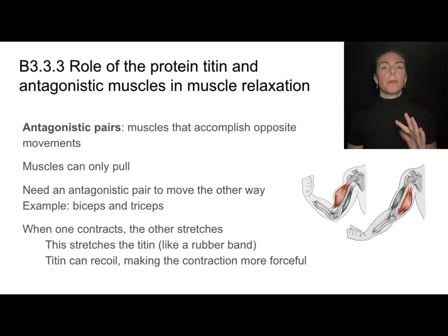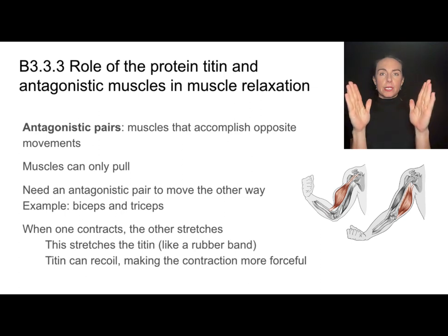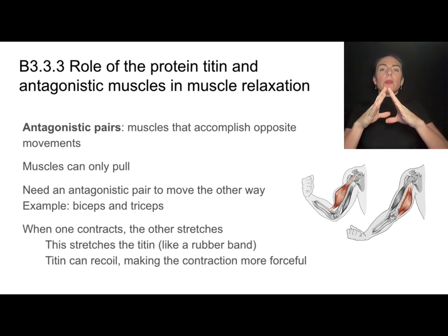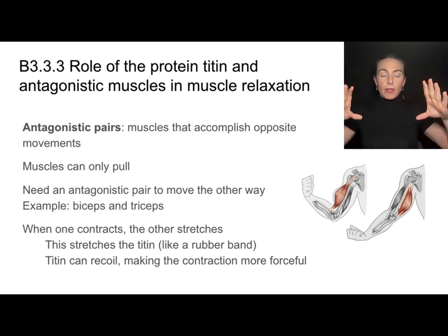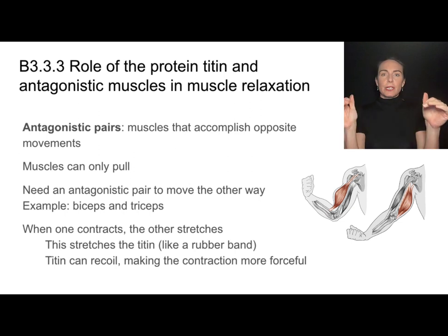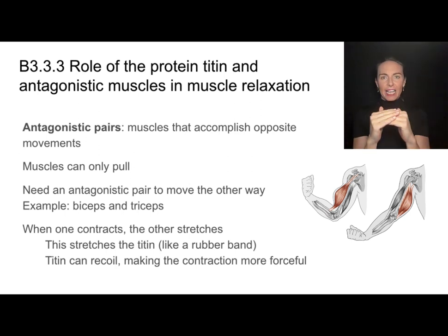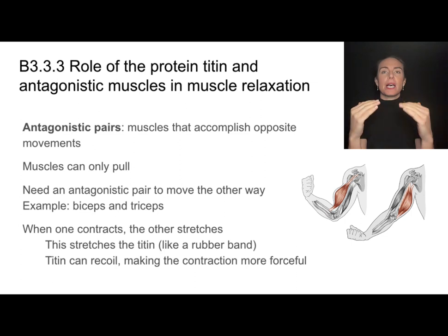This relates to the protein titin. Titin is going to connect the myosin to the Z lines. When your sarcomeres relax, they're actually stretching that titin and it becomes like a rubber band — it can actually recoil and create a forceful contraction when that antagonistic muscle pair also needs to contract. So titin helps out with that antagonistic movement.